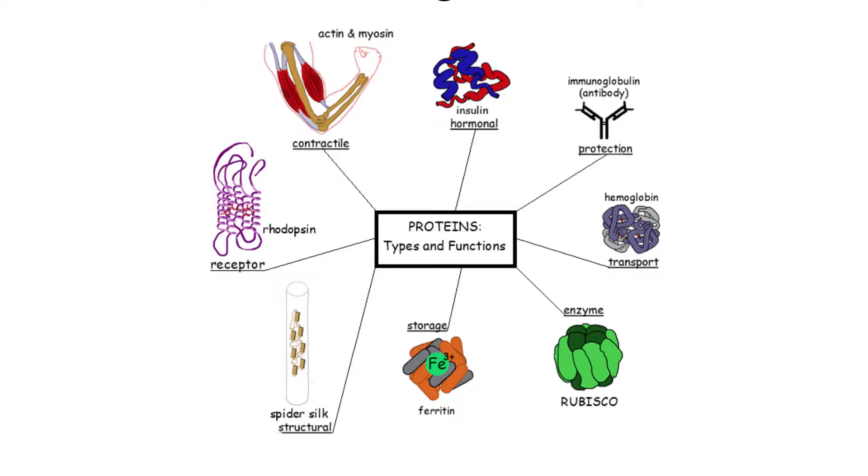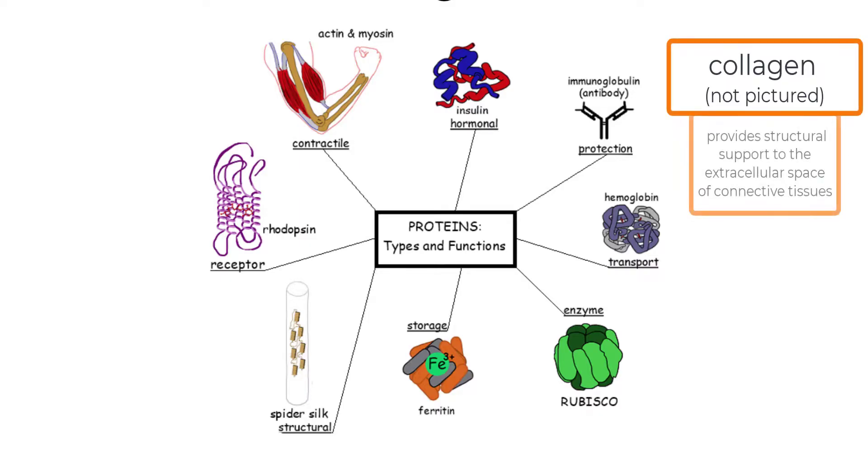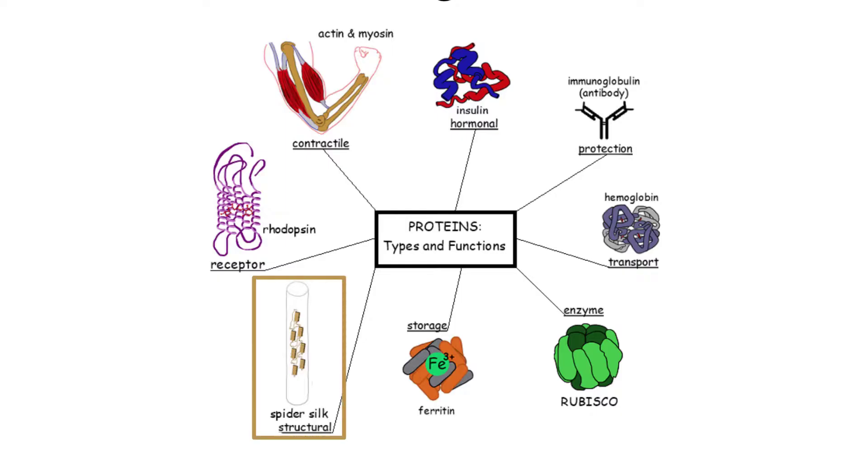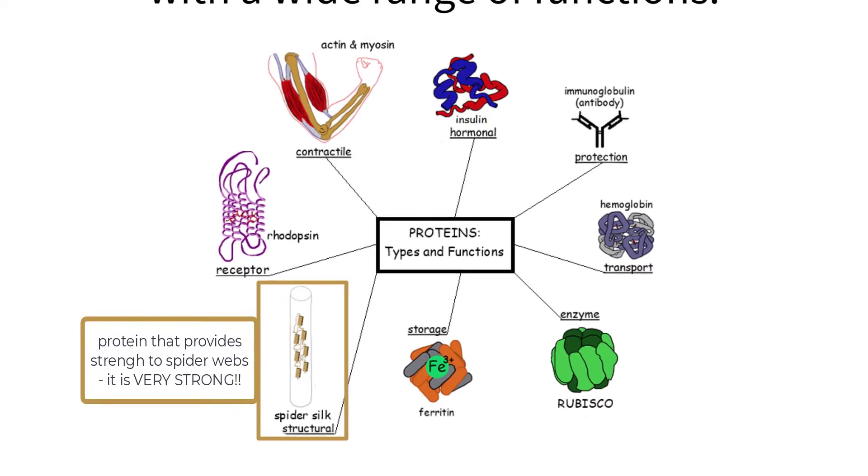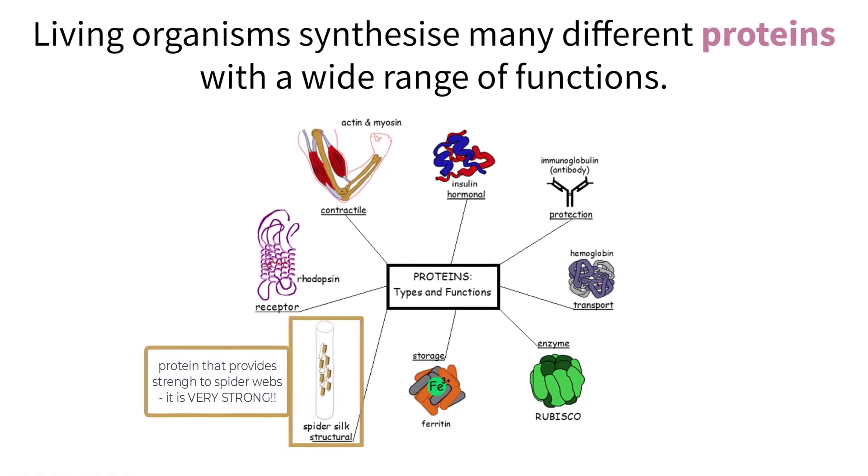Next up we have a structural protein called collagen. Collagen is made in animals and is the most abundant protein in your body. Its unique structure provides important support for your skin, bones, tendons, and muscle tissue. And last but not least we have spider silk. Spider silk is made out of a very unique protein that is, obviously, made by spiders. It is used to strengthen their webs, and compared to other structural support building blocks, it is extremely strong. By weight it is stronger than steel. Pretty amazing considering that it is built via the same method of any other protein.